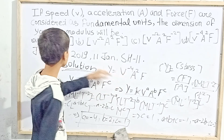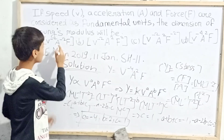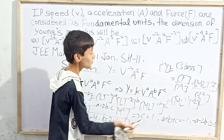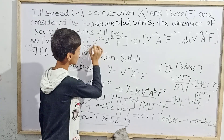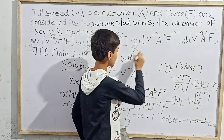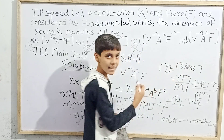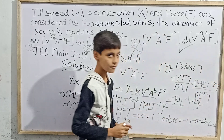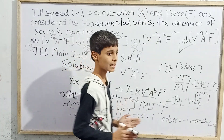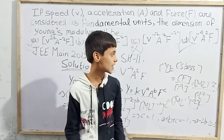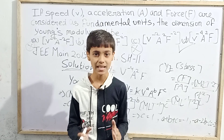Checking the options: Option 1 has v⁻⁴ a⁻² f — the v and f match but a should be +2, not −2, so it's wrong. Options 2 and 3 have v⁻², which doesn't match our v⁻⁴, so they are wrong. Option 4 is v⁻⁴ a² f, which matches all our calculated values. Hence option D is the correct answer. The dimensional formula for Young's modulus with v, a, f as fundamental units is v⁻⁴ a² f.